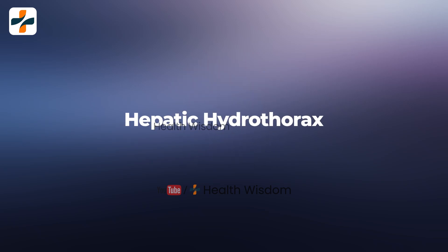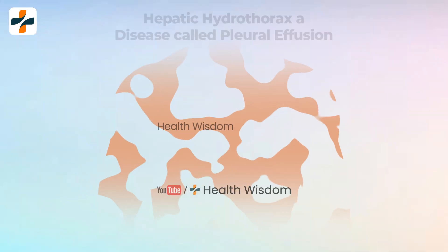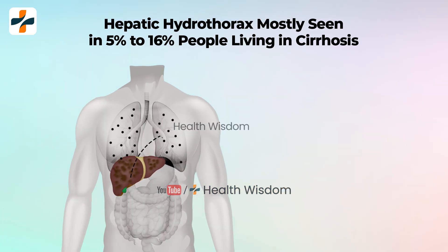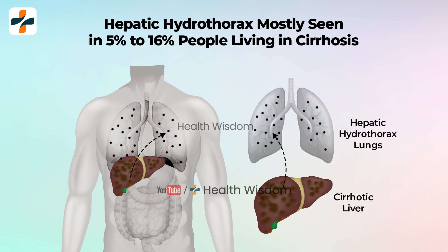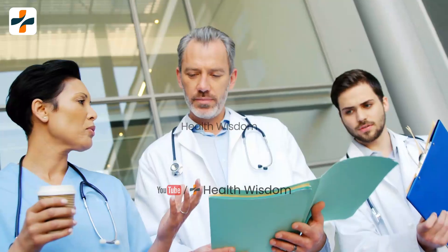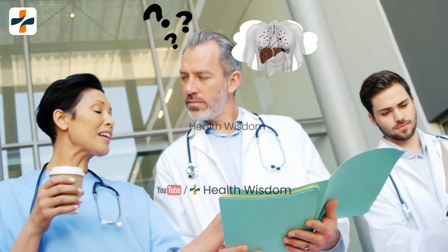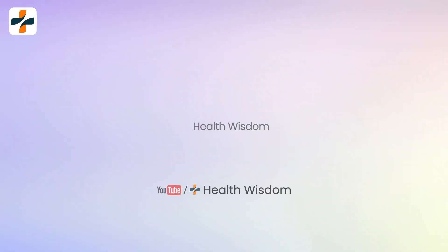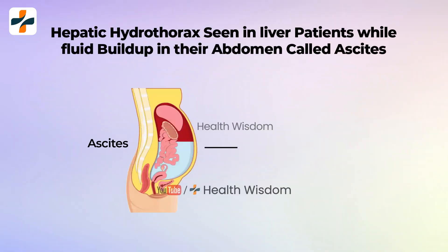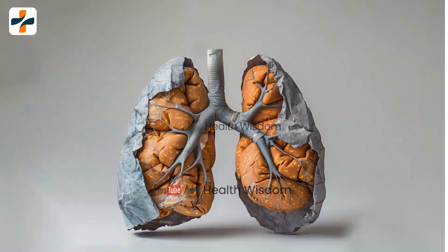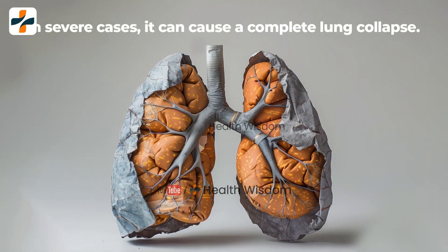1. Hepatic Hydrothorax. Hepatic hydrothorax is a type of disease called pleural effusion — a buildup of fluid around your lungs. This problem is mostly seen in 5% to 16% of people living with cirrhosis. Research doesn't fully understand why liver disease causes hepatic hydrothorax. This issue is especially seen in liver patients who have fluid buildup in their abdomen, called ascites. In severe cases, it can cause a complete lung collapse.